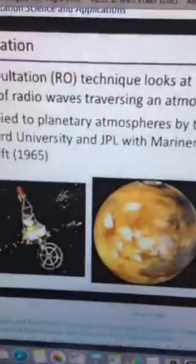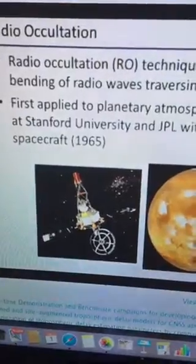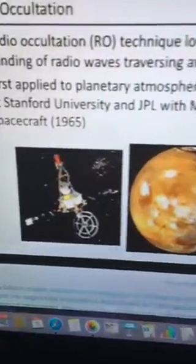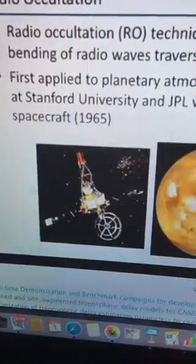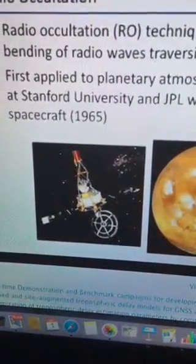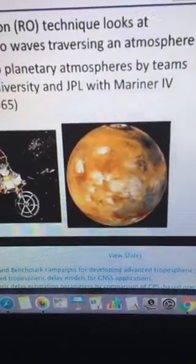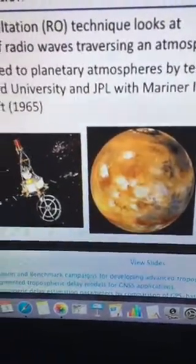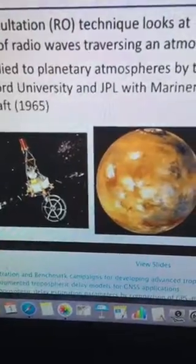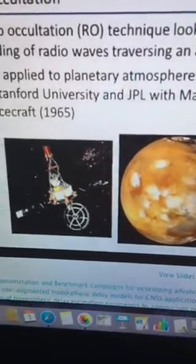Just a simple sentence about radio occultation. It's a technique that looks at the bending of radio waves as they traverse an atmosphere. There are a lot of details there, but it's not a very new technique. It was used in the 1960s to look at planetary atmospheres by some teams at JPL and Stanford with the Mariner 4 mission. They looked at a couple of planets at the time.